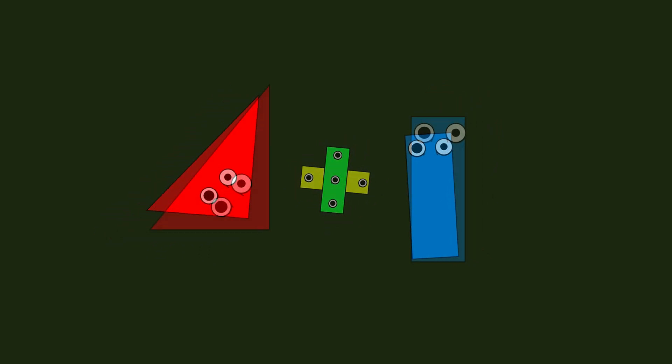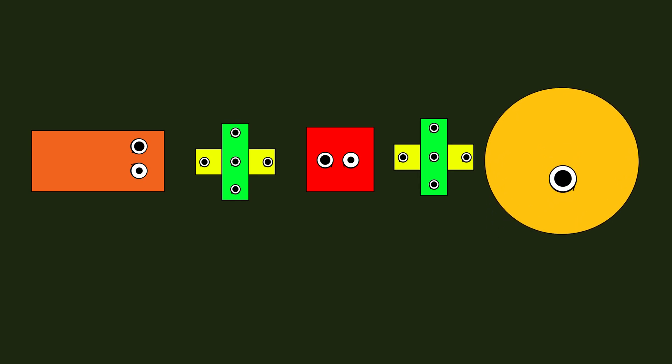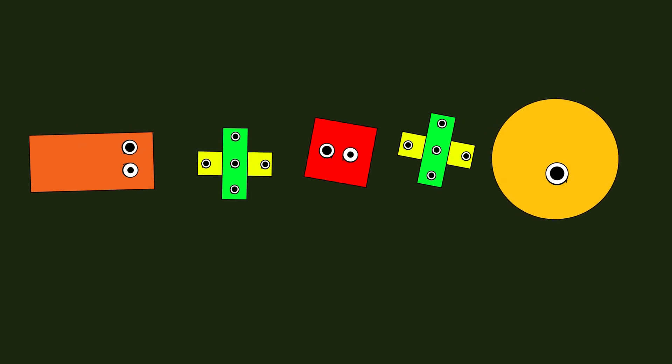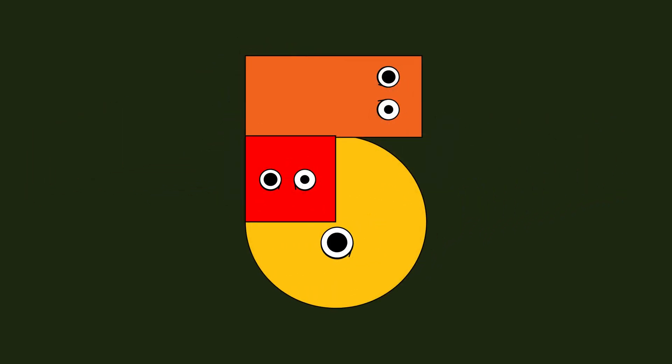Number 5: rectangle plus square, plus circle. When the shapes connect in a row, make number 5.